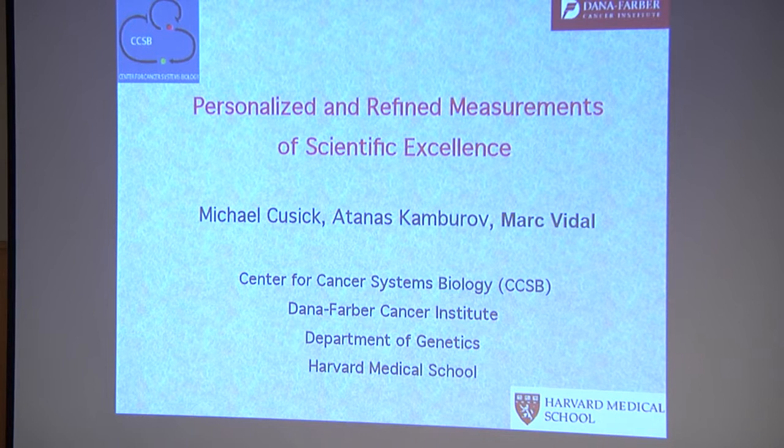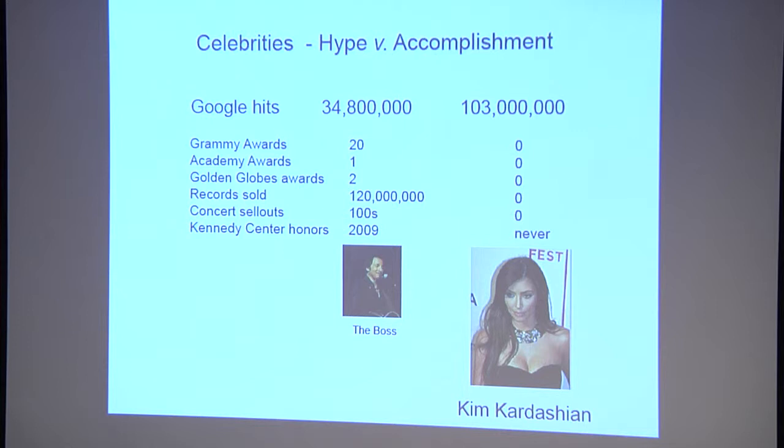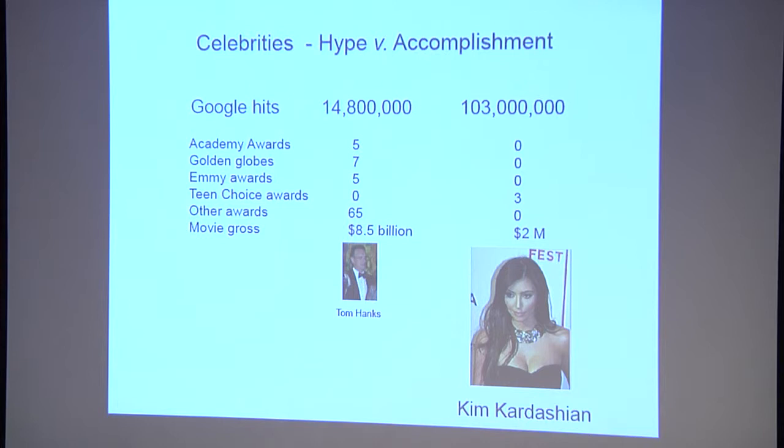First I want to give an example of the disparities that can come up in measuring success. Who's the most Googled celebrity in the world right now? It's Kim Kardashian. Compared to the Boss, she's got three times as many Google hits, though the Boss has tremendous accomplishments. If we go to a movie actor, Tom Hanks only has one fifth. So these disparities are real, and we're going to show that they come up in measurement of scientific success as well.